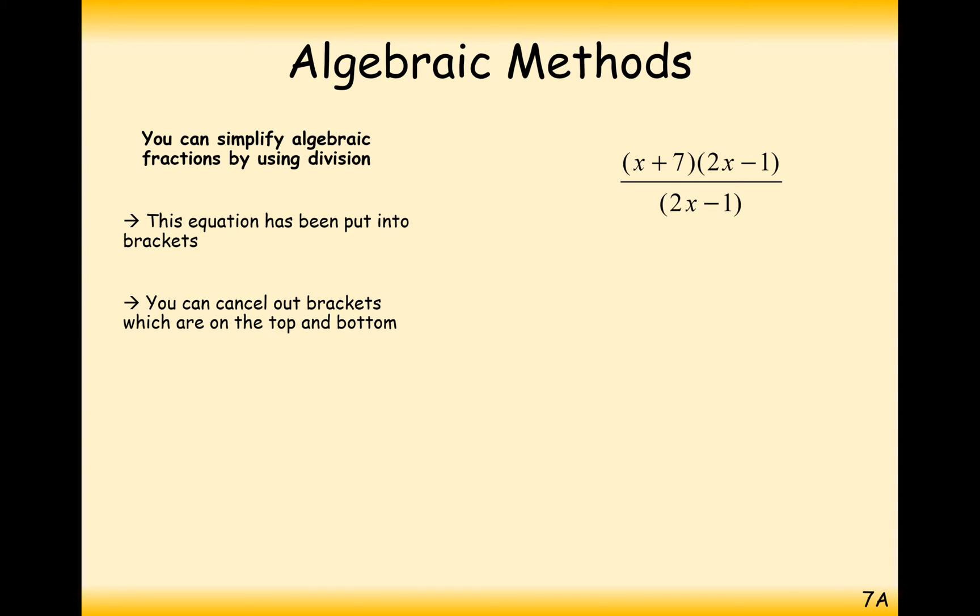So you can also cancel out algebraic expressions that were in brackets. For this example here, a real simple example would be just cancelling out the 2x minus 1 on the top and bottom of the fraction. So you just get x plus 7 over 1 which is the same as x plus 7. Any fraction over 1 is just itself.